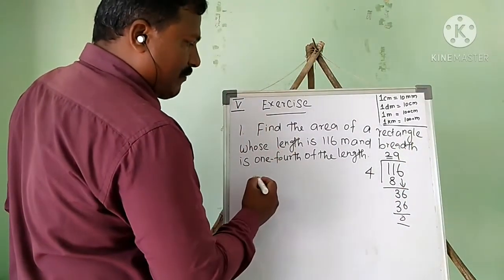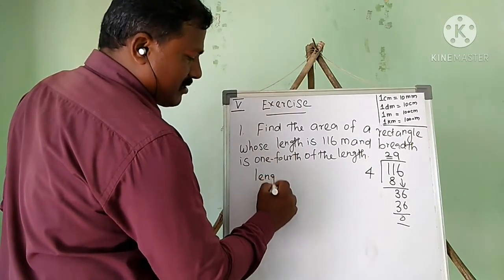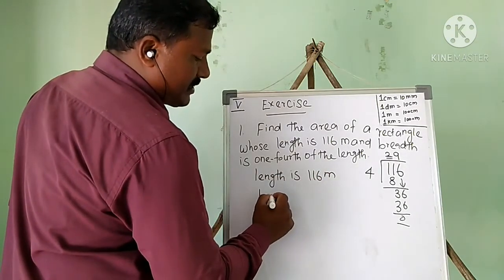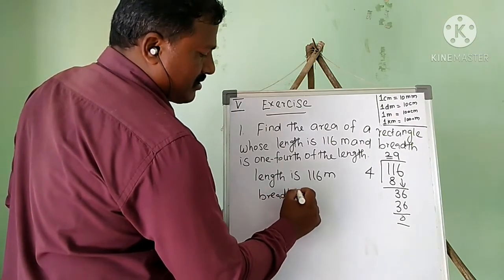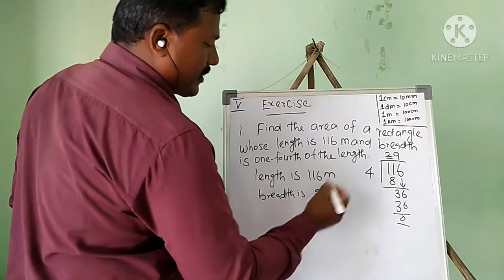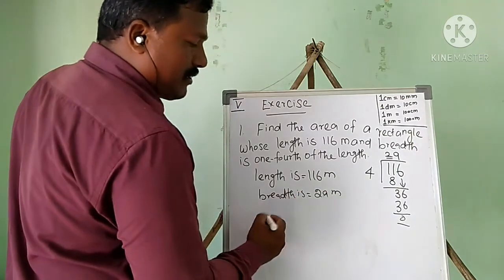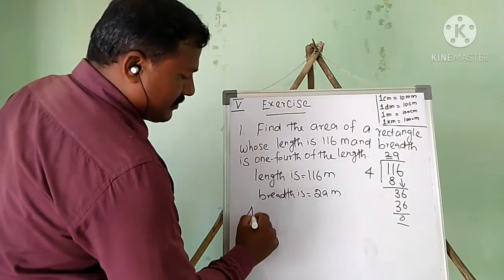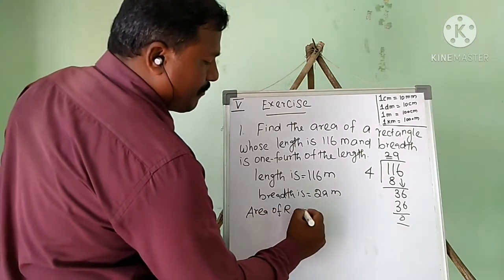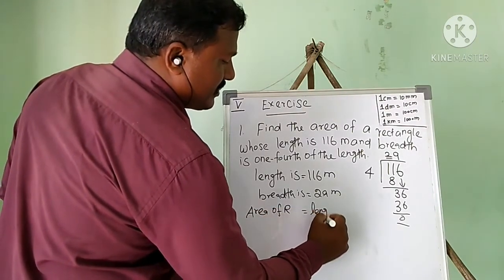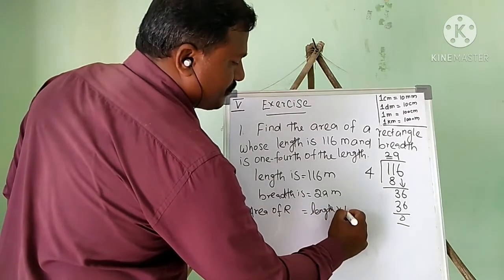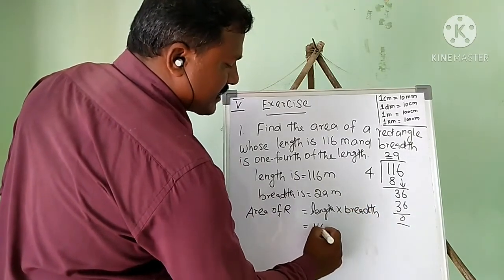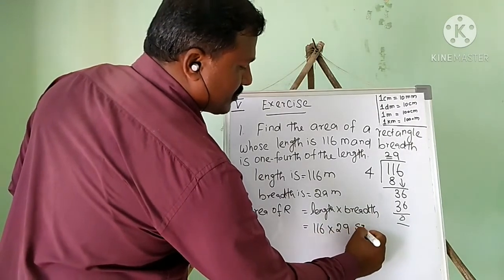Now the area of the rectangle: the length is 116 meters and the breadth is 29 meters. Area of a rectangle equals length multiplied by breadth, so we calculate 116 multiplied by 29 square meters.